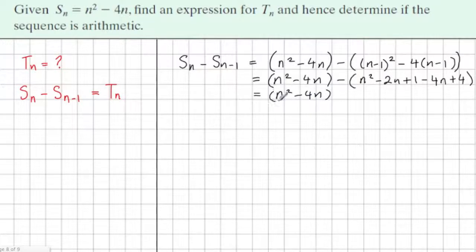This n squared minus 4n still. I'm just going to take 2n minus 4n, which is minus 6n, and plus 1 plus 4 is 5.